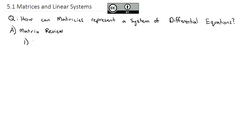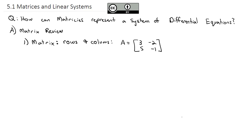Let's define what a matrix is. A matrix is made up of rows and columns. For example, matrix A could be [3, -2; 5, -1] — two rows and two columns. It doesn't have to be square. Matrix B could be [2; 3], which has only one column. We call this type of matrix a vector — specifically a column vector. We could also have a row vector, which is just one row.